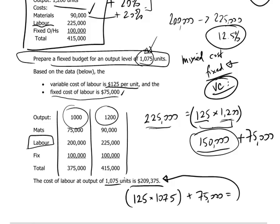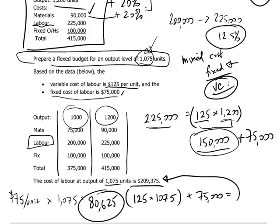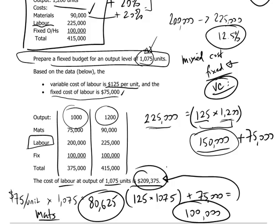The materials costs will be $75 per unit times 1,075 units, giving $80,625. So we have labor of $209,375, materials of $80,625, and of course the fixed overheads, which remain at $100,000 — they haven't changed. Adding those three numbers together gives us our total production costs associated with an output level of 1,075 units.